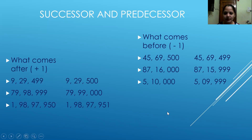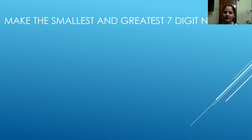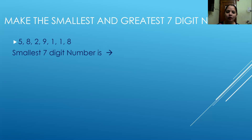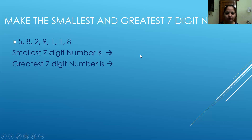Practice with a few more examples so that the concept is clear. Now make the smallest and the greatest seven digit number — you've already done this in fourth form. When we say we have to make the smallest seven digit number, we will start from the smallest digit. From the digits given, one is the smallest digit. One is repeated two times, so I will repeat it two times. The smallest number is 11,25,889.